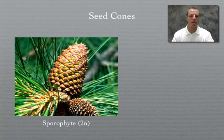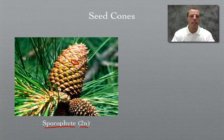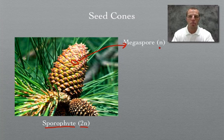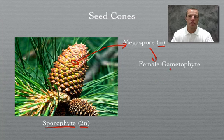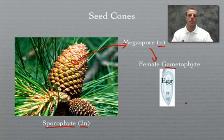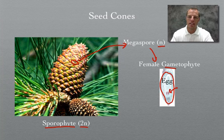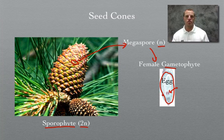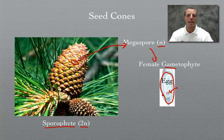Over here at the seed cones — the female portion of our plant — this is also a sporophyte and also diploid. Each one of these sporophytes is going to go through meiosis to produce what we call a megaspore. This megaspore, having gone through meiosis, is haploid. That megaspore will eventually become the female gametophyte, which is the female gamete — in this case, an egg. Each one of these is basically an ovule, and this right here is the egg. This process is really similar to how humans reproduce — we require a male and female structure, both carrying a sex cell, and those two have to meet for reproduction to take place.